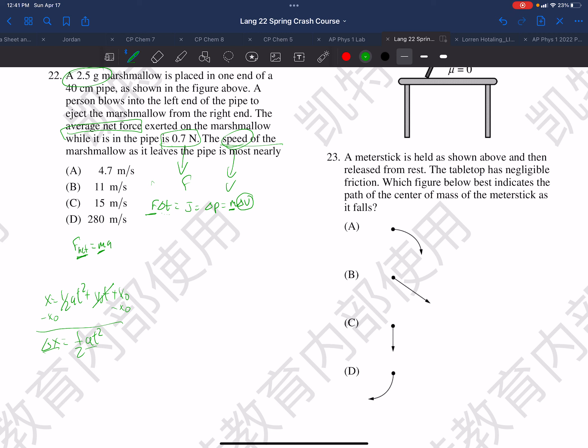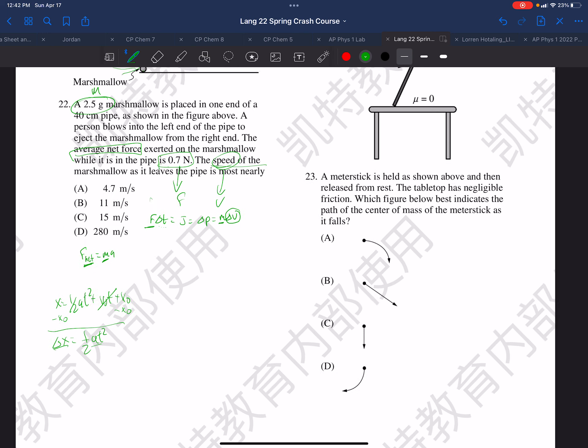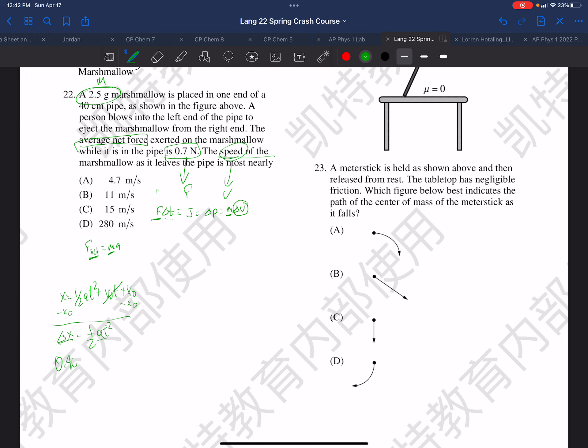Delta x we know is 0.40 and the acceleration: 0.7 equals 0.0025 a, so a is 0.7 divided by 0.0025, and that has a value of 280.